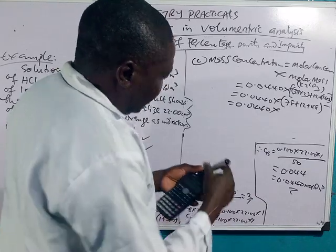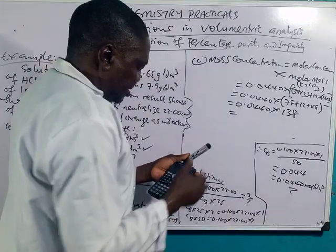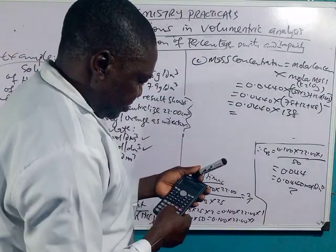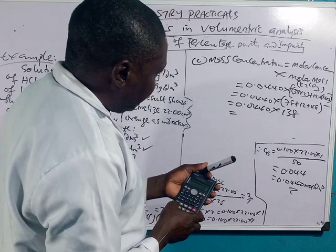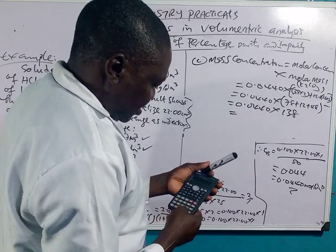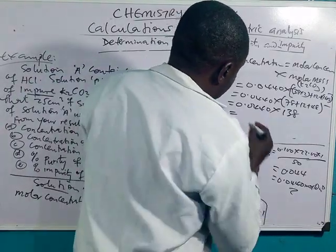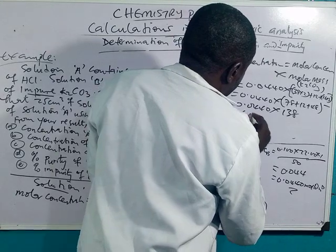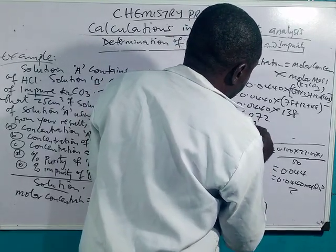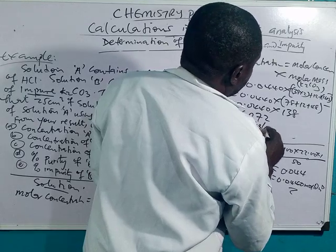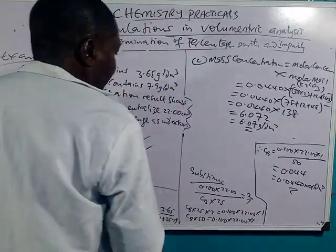The molar mass of K₂CO₃ is 138 g/mol. So mass concentration equals 0.0440 times 138, which gives 6.07 g/dm³. That is the mass concentration of B.